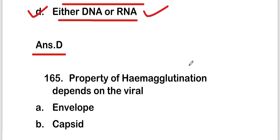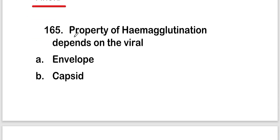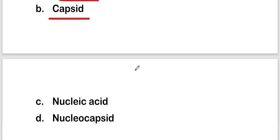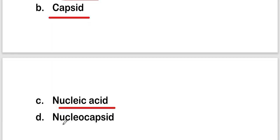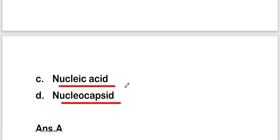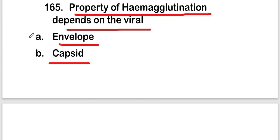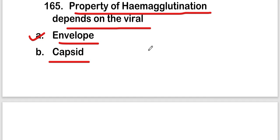Next question: the property of hemagglutination depends on — the viral envelope, capsid, nucleic acid, or nucleocapsid. The right answer is option A — the viral envelope. So the property of hemagglutination depends on the viral envelope.